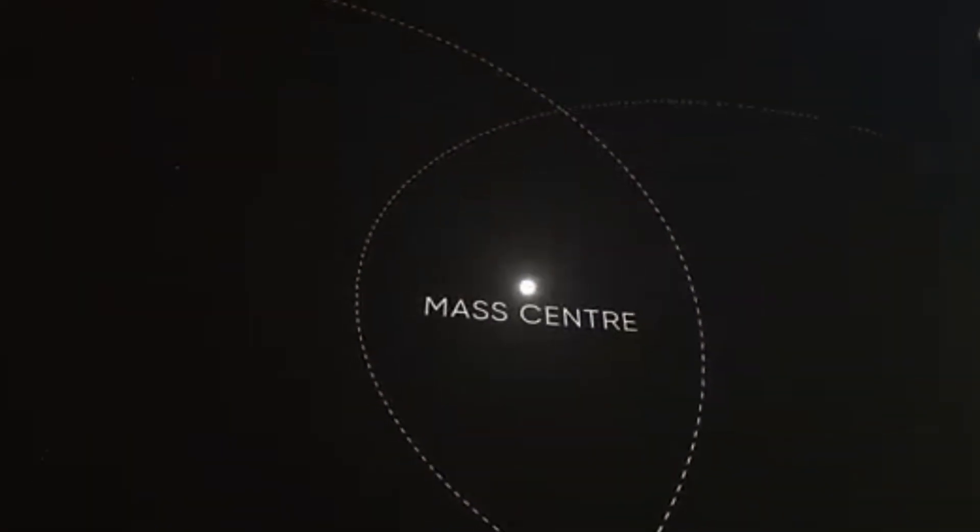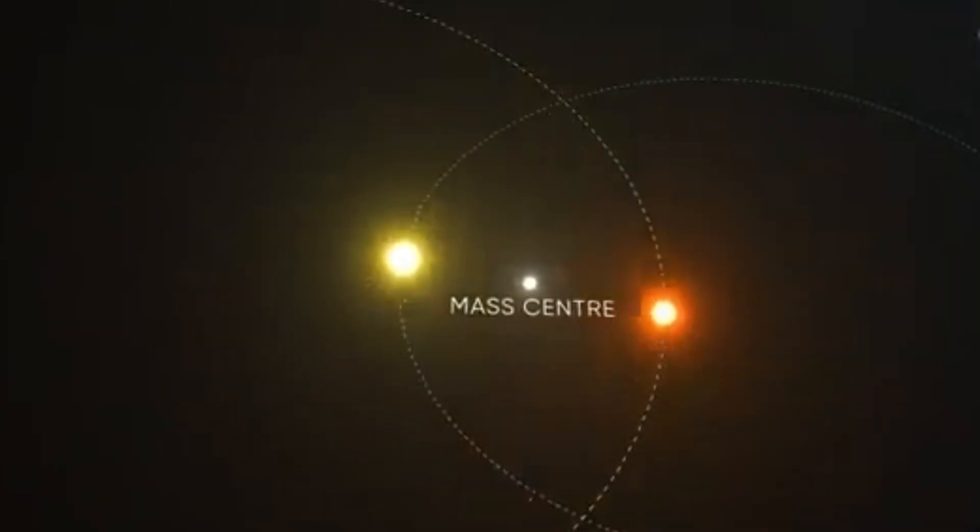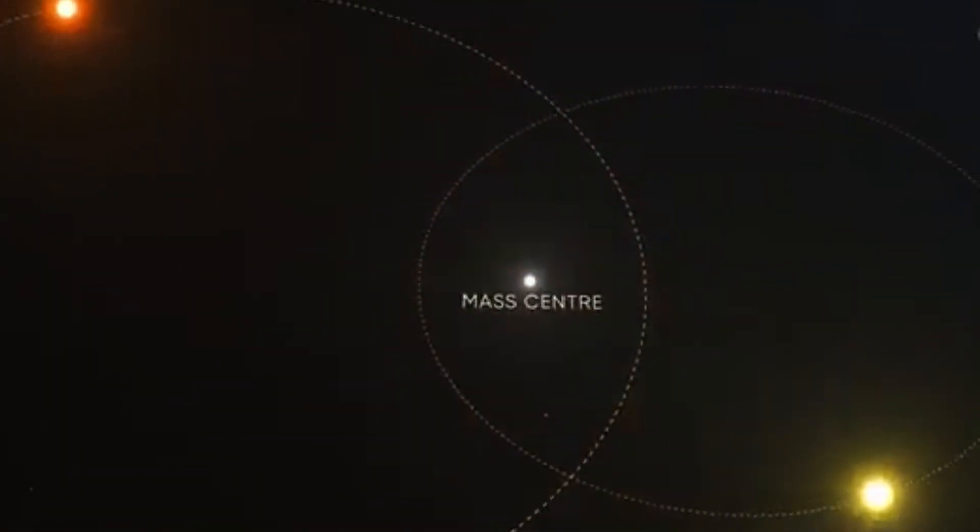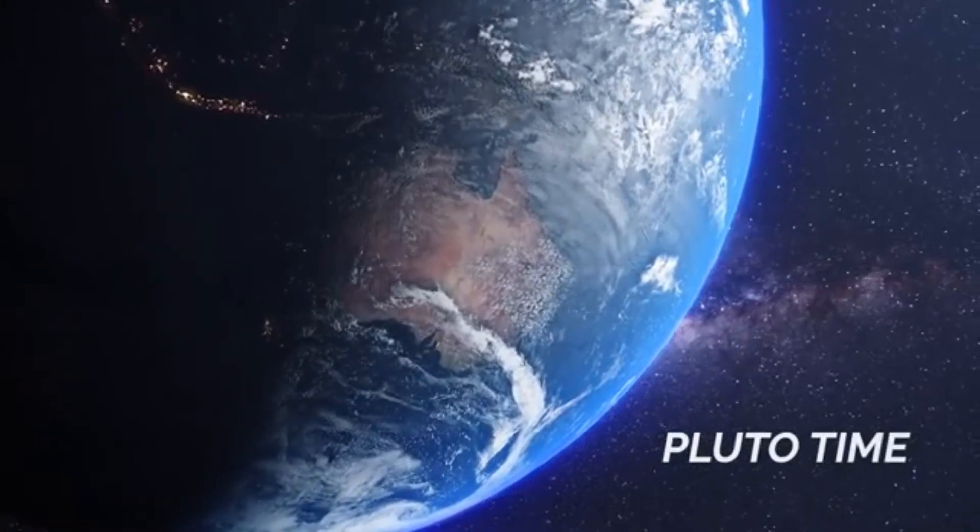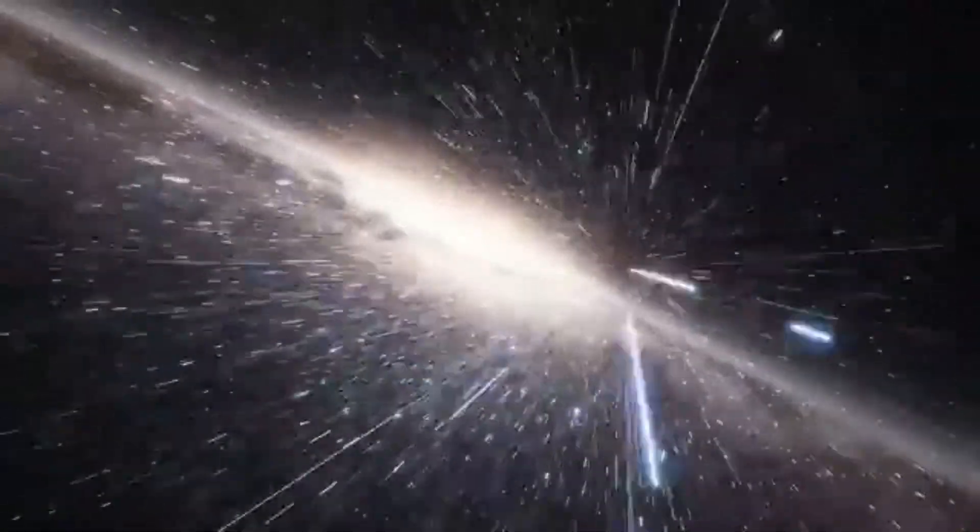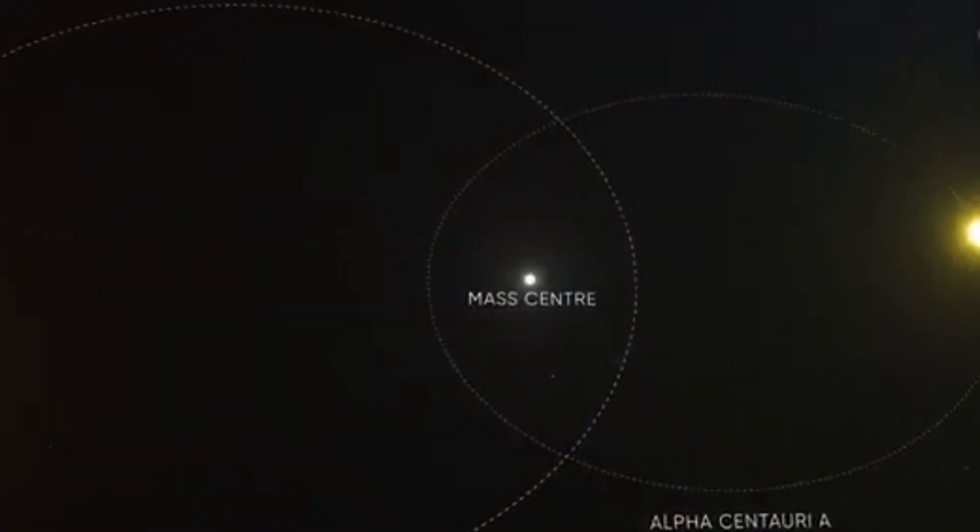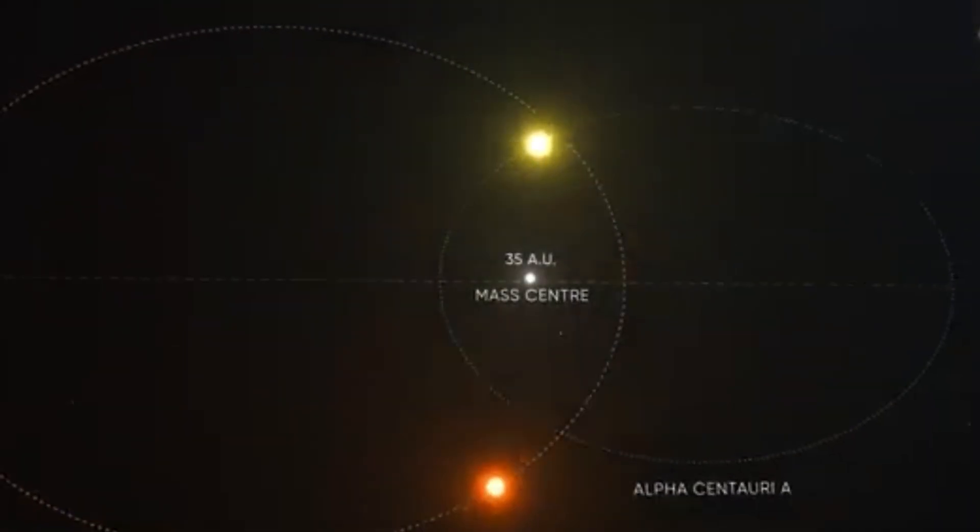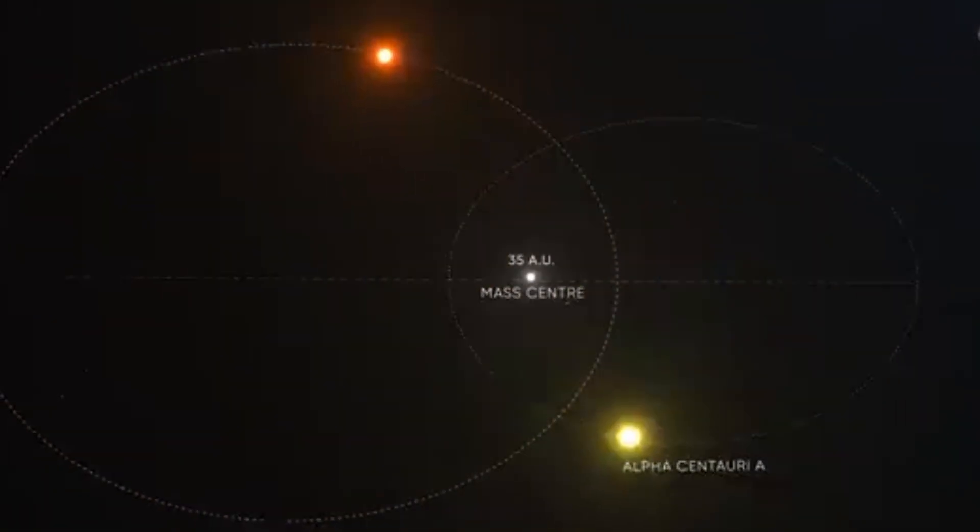If we condense the entire solar system into the size of a penny, Alpha Centauri would still be more than 300 meters away. Isn't it incredible that our journey to the stars is just beginning after we have left all known planets and reach Pluto? After all, Pluto is not the end, but the beginning of our incredible journey.